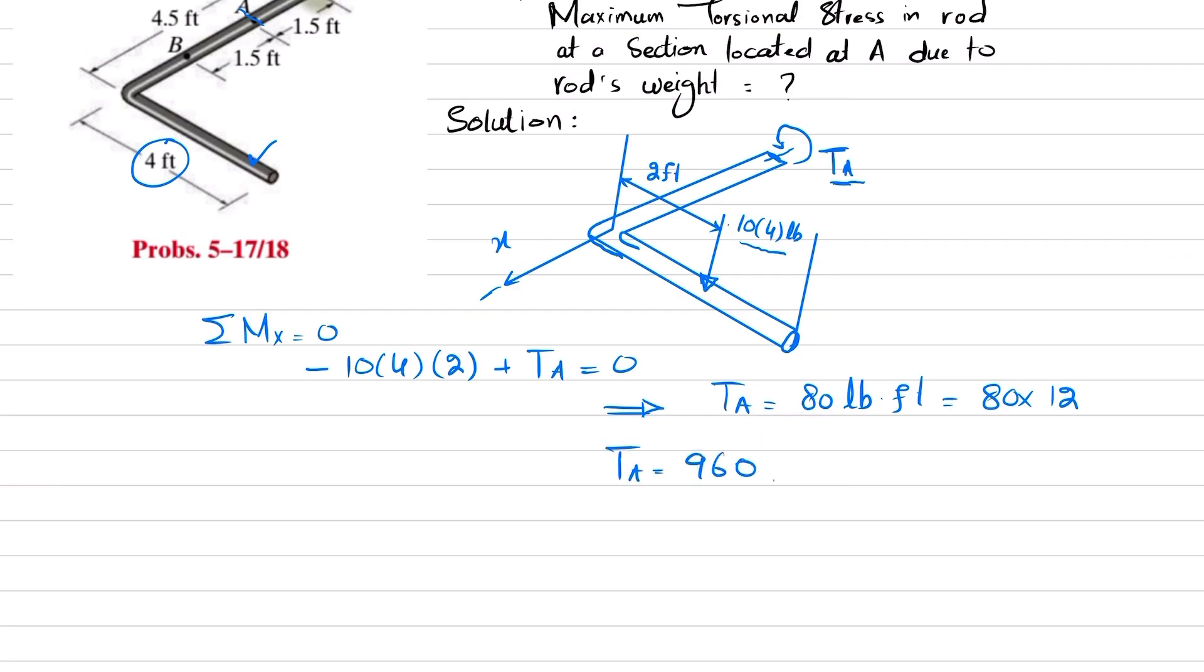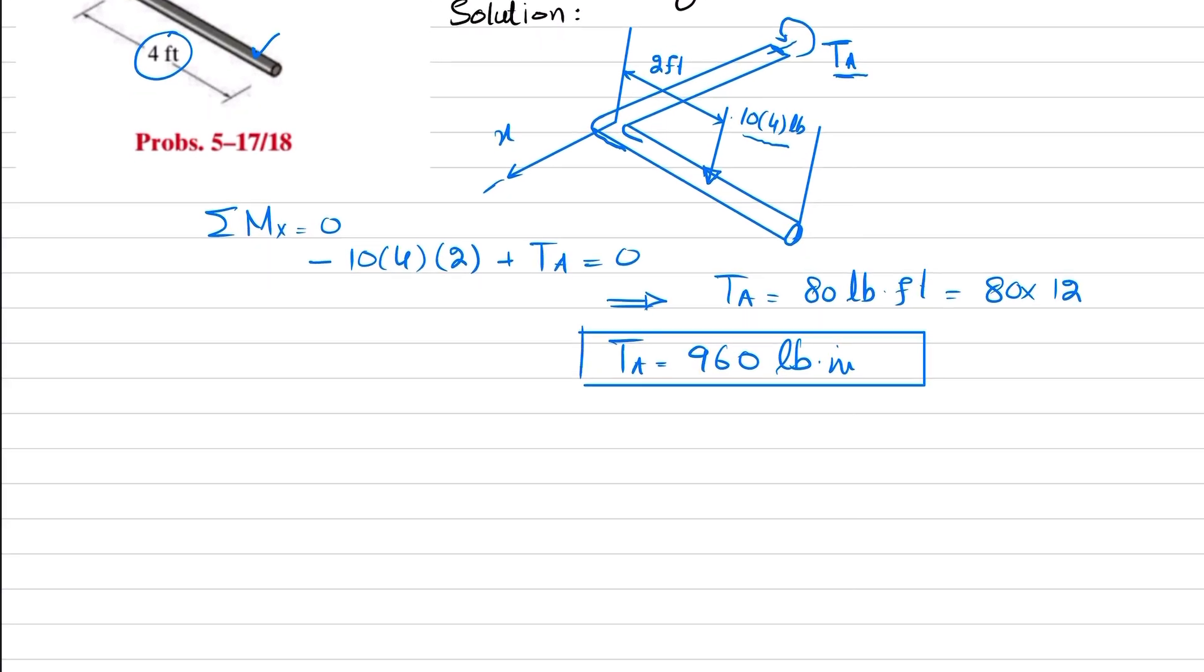Now you have torque at point A, so you can easily find the maximum shear stress at point A. Maximum shear stress is equal to torque at point A times c divided by J.